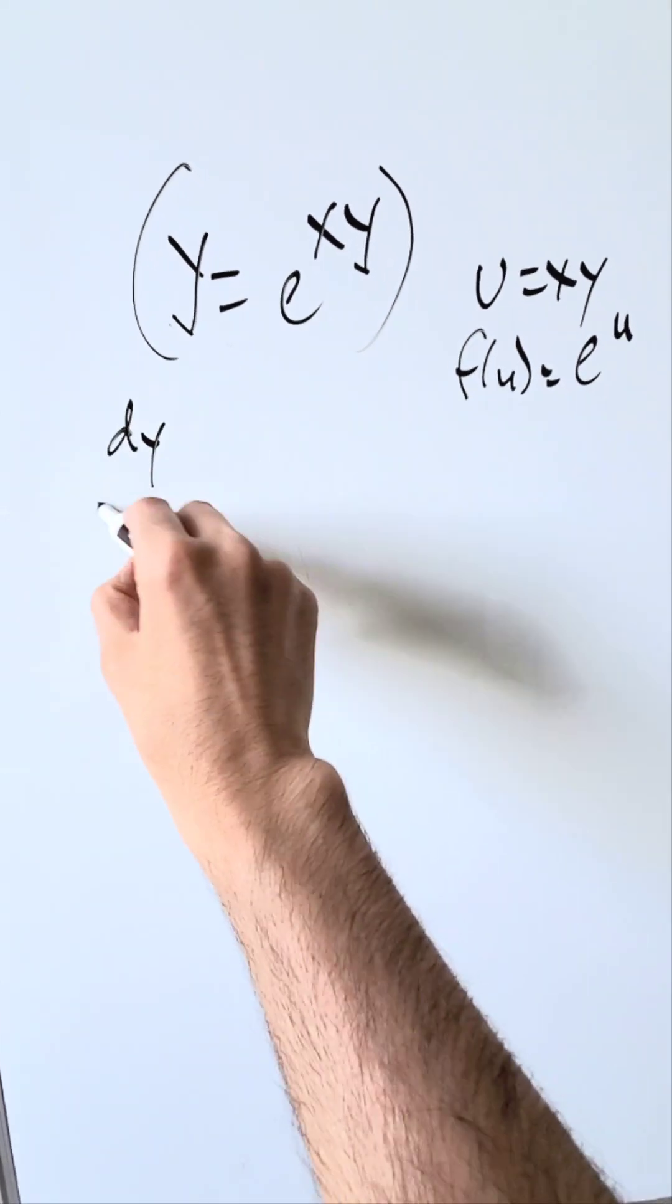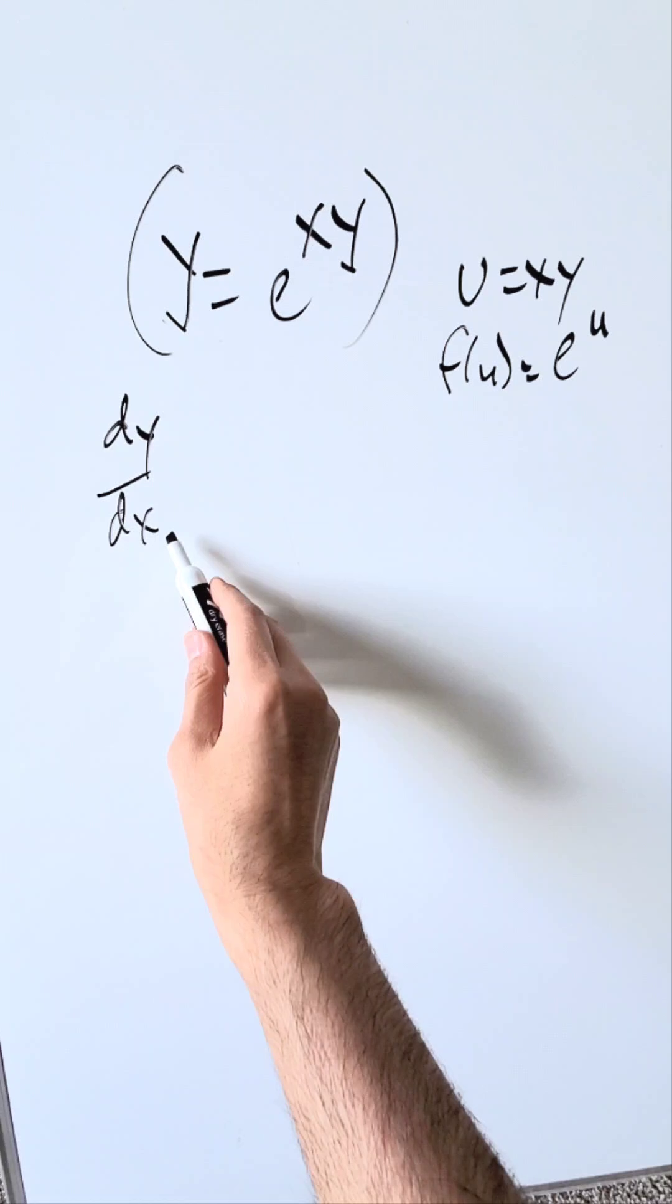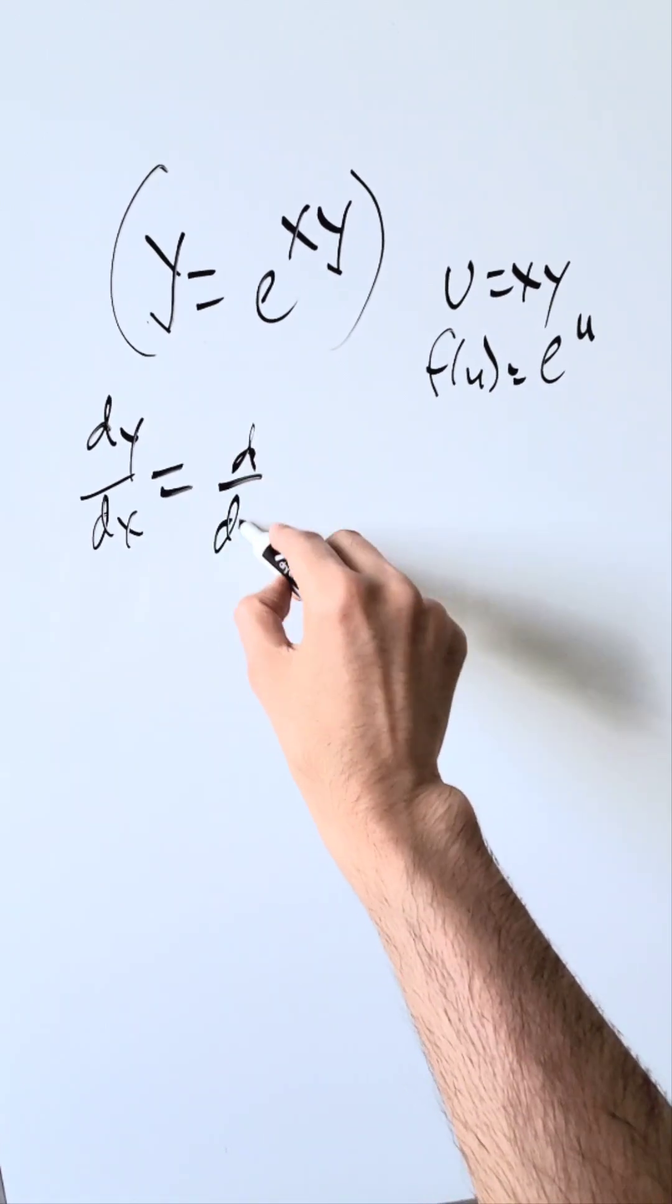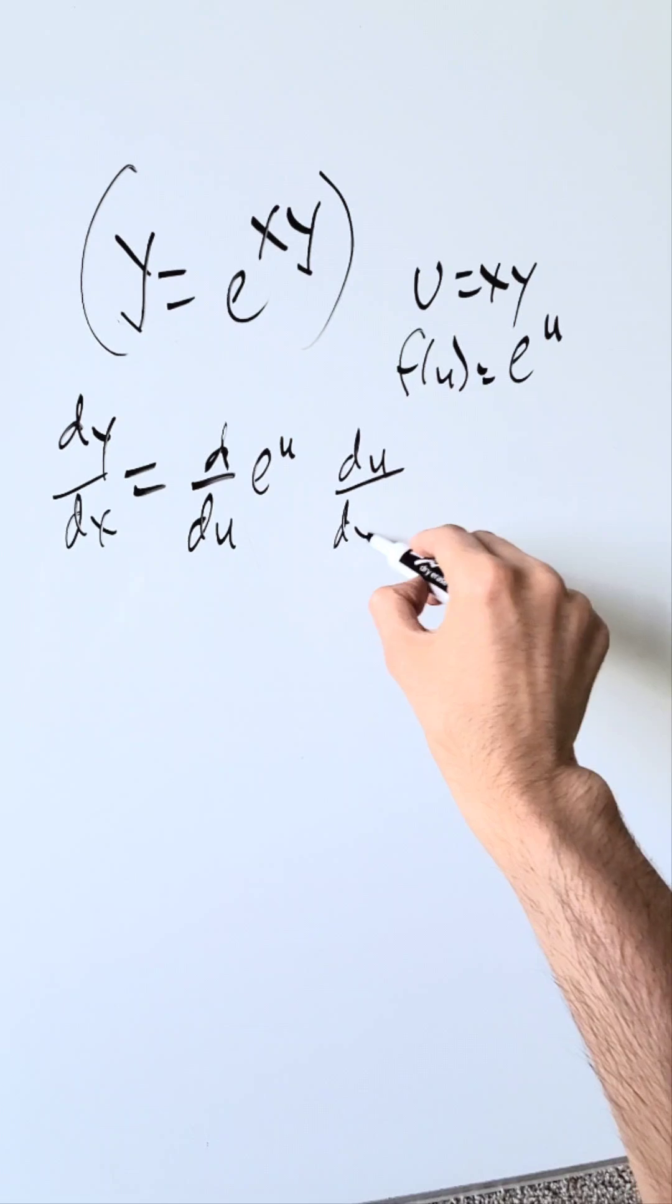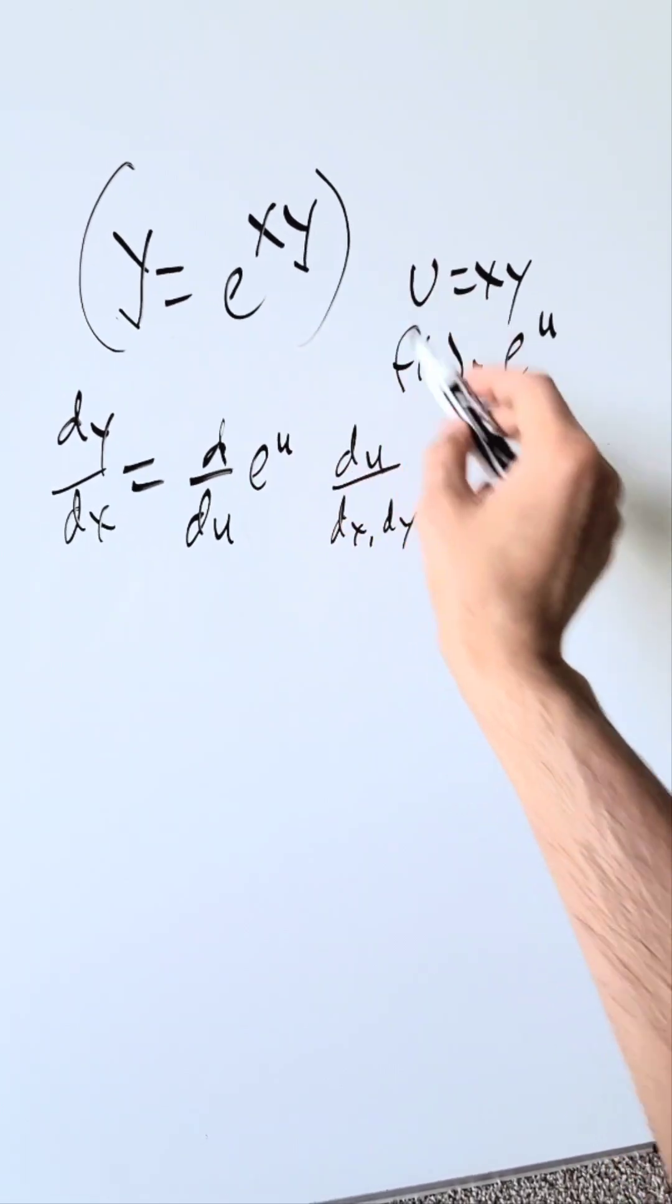The derivative of y in the implicit differentiation process is going to bring dy/dx equals the derivative with respect to the u variable. You have e to the u and then you have the derivative of u with respect to the dx and dy variables which are involved right here.